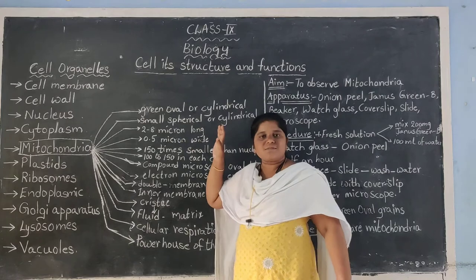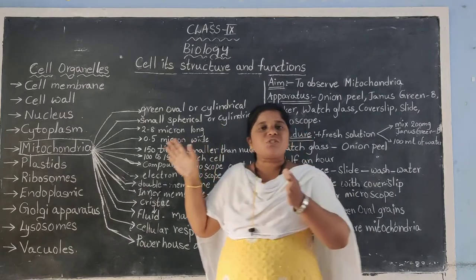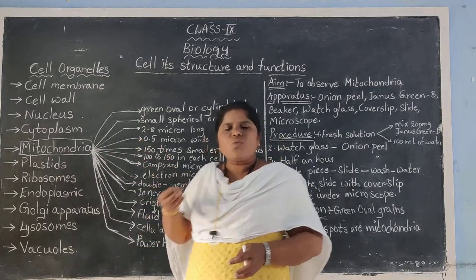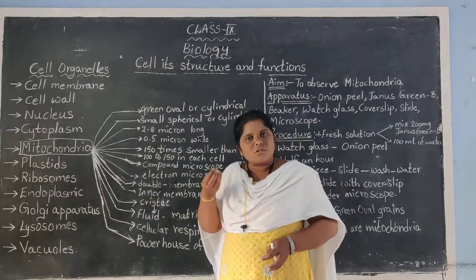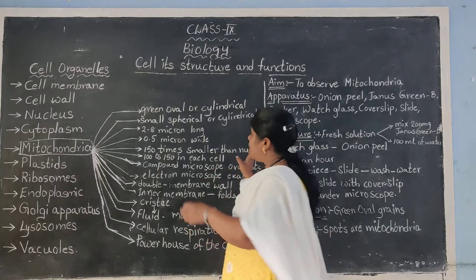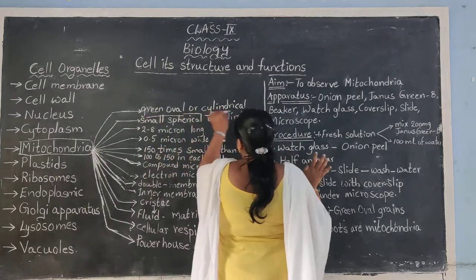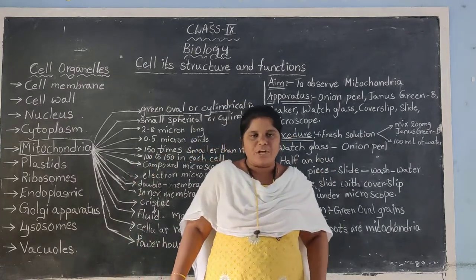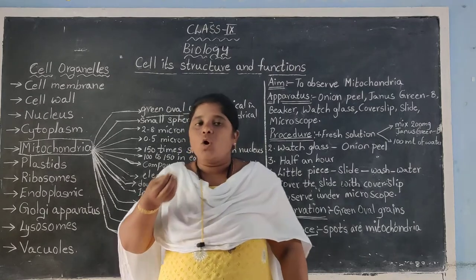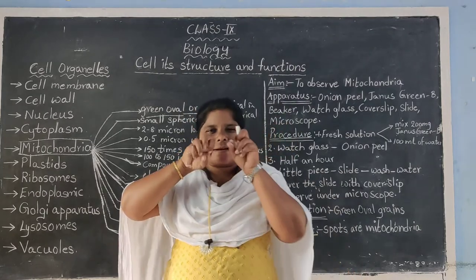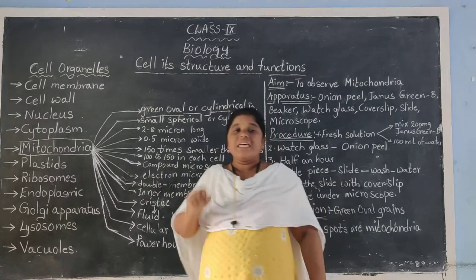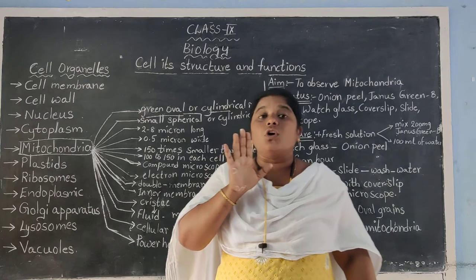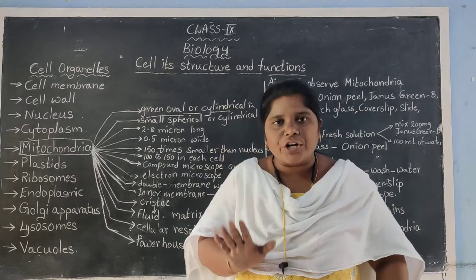Now, what is mitochondria? It is a special cell organelle present in the cell. When you observe mitochondria under a compound microscope, you will see green coloured oval and cylindrical grains scattered in the cytoplasm. Those green coloured oval or cylindrical grains are called mitochondria.